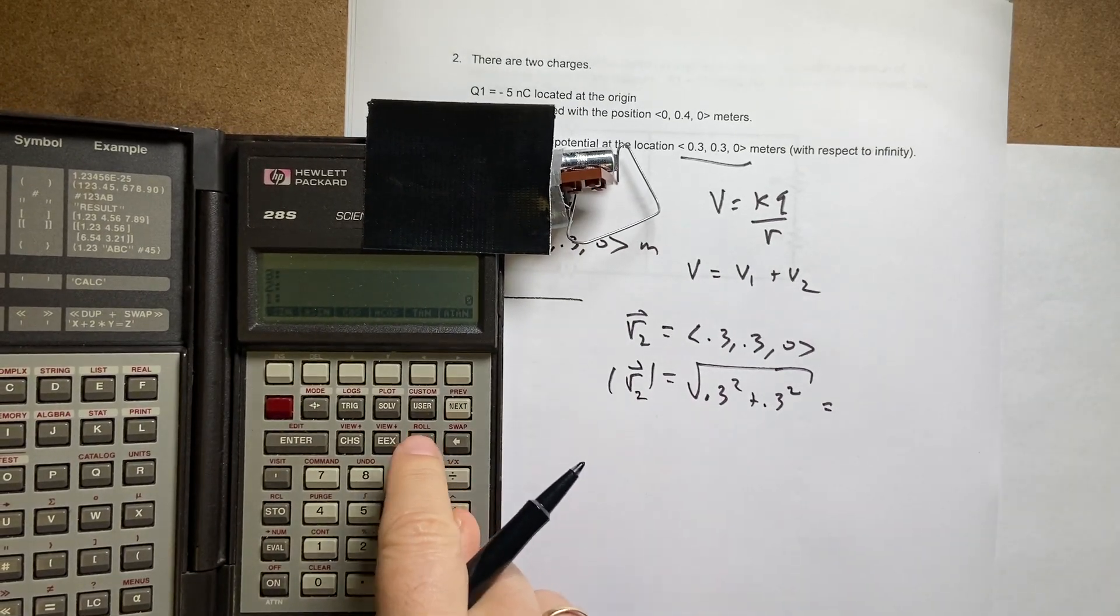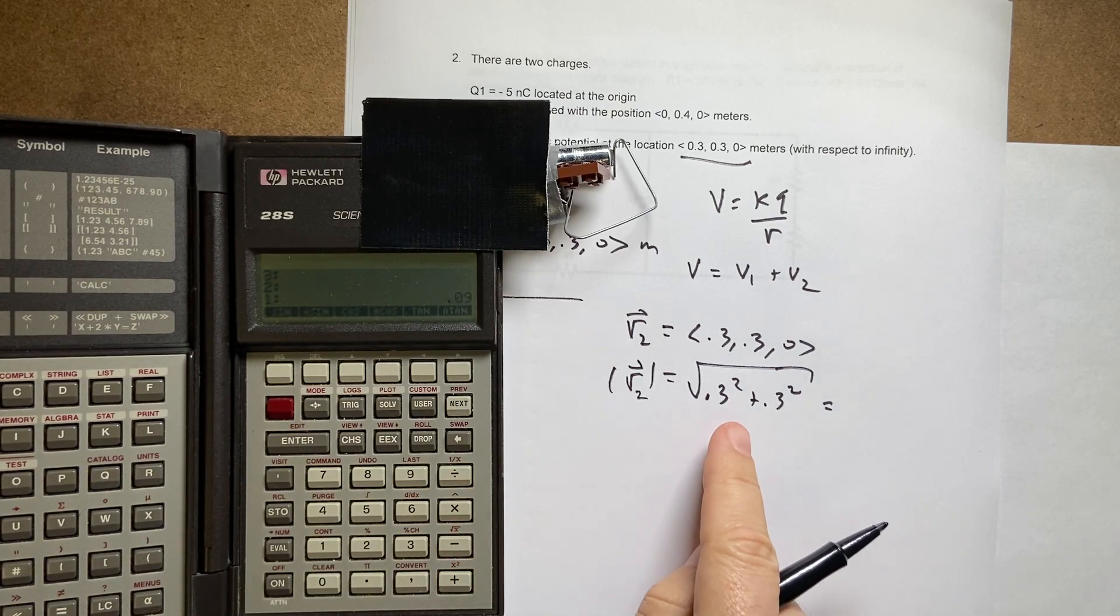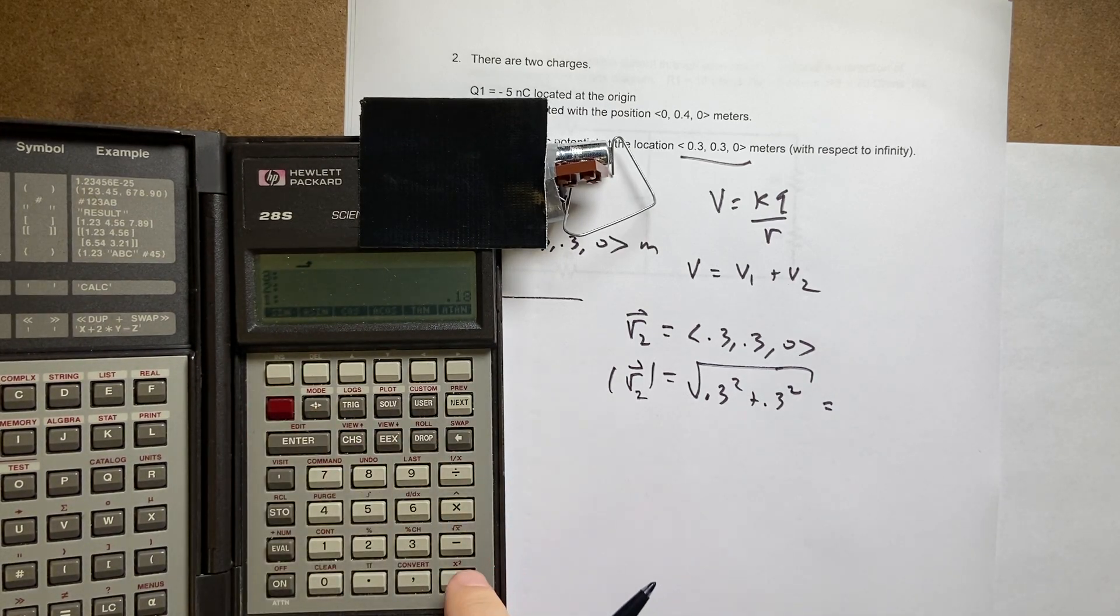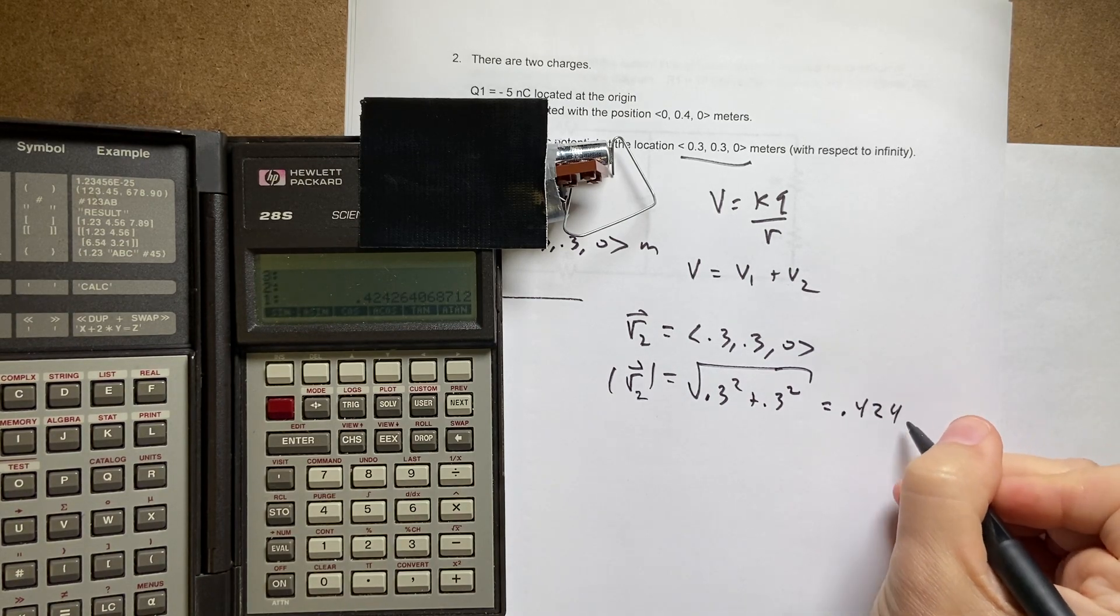So I'm going to say 0.3 enter squared. Now I have two of them, so two times and then take the square root. And I get 0.424 meters.